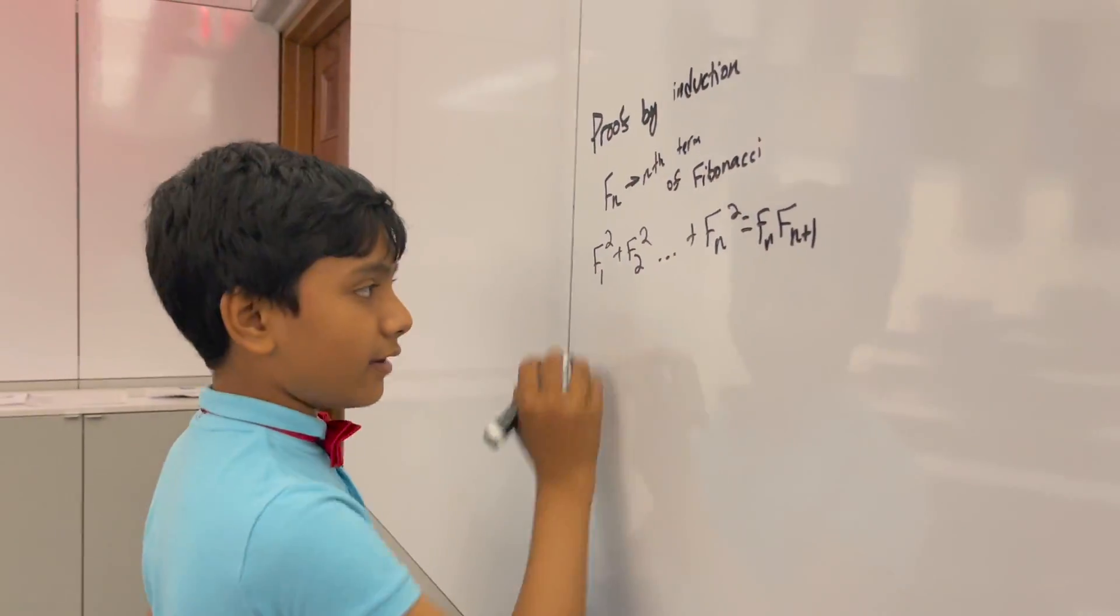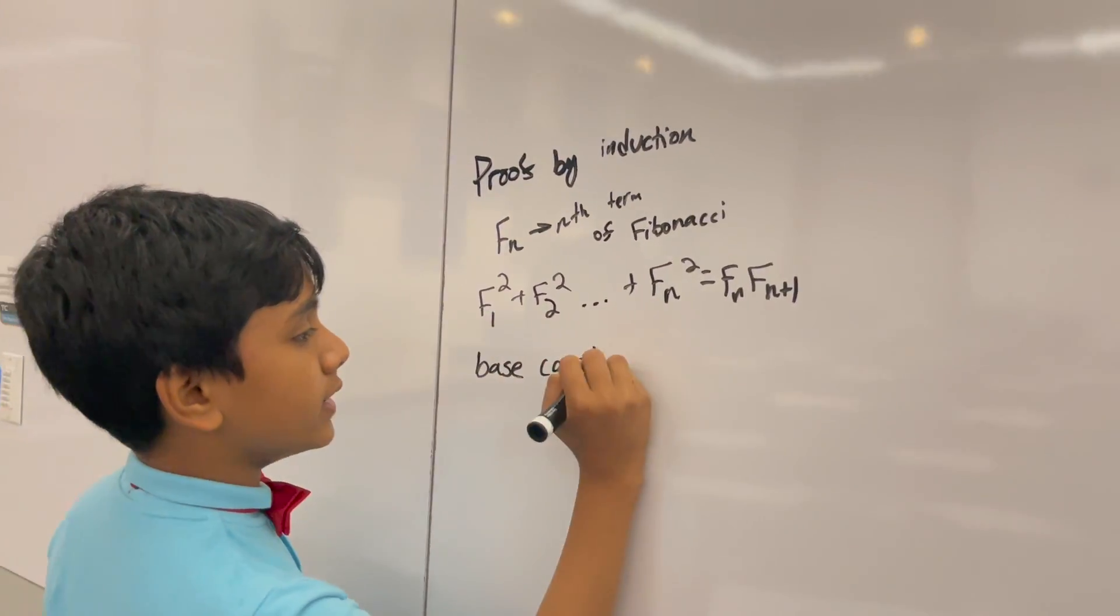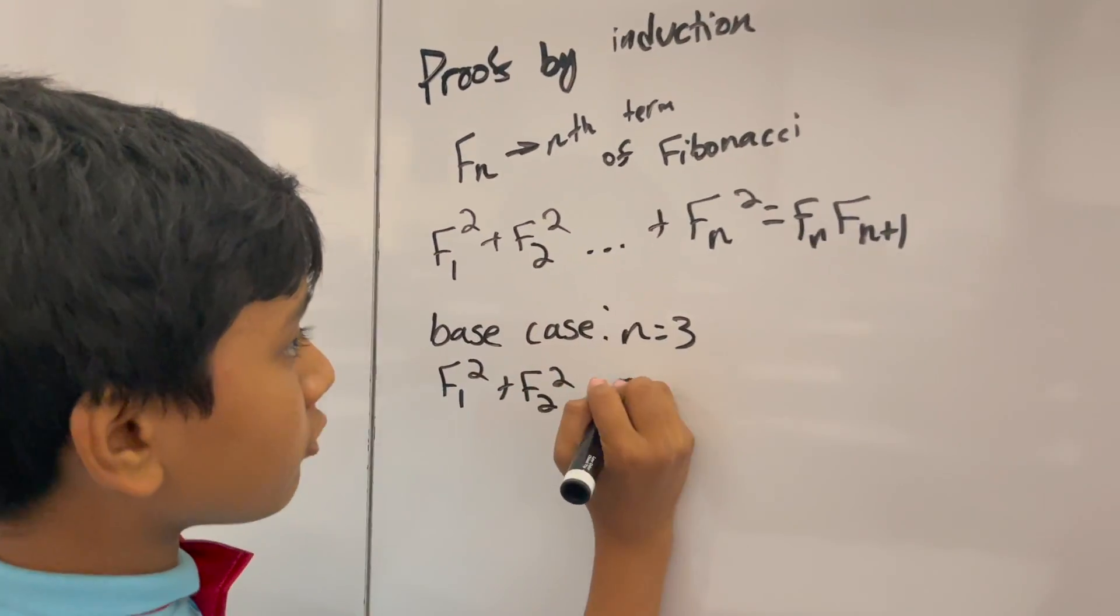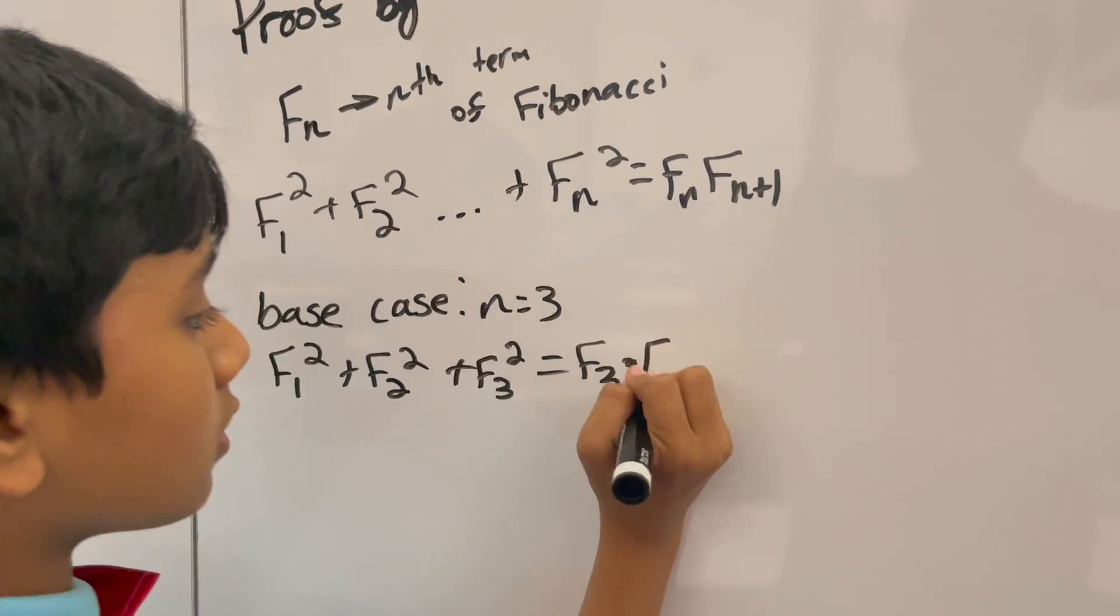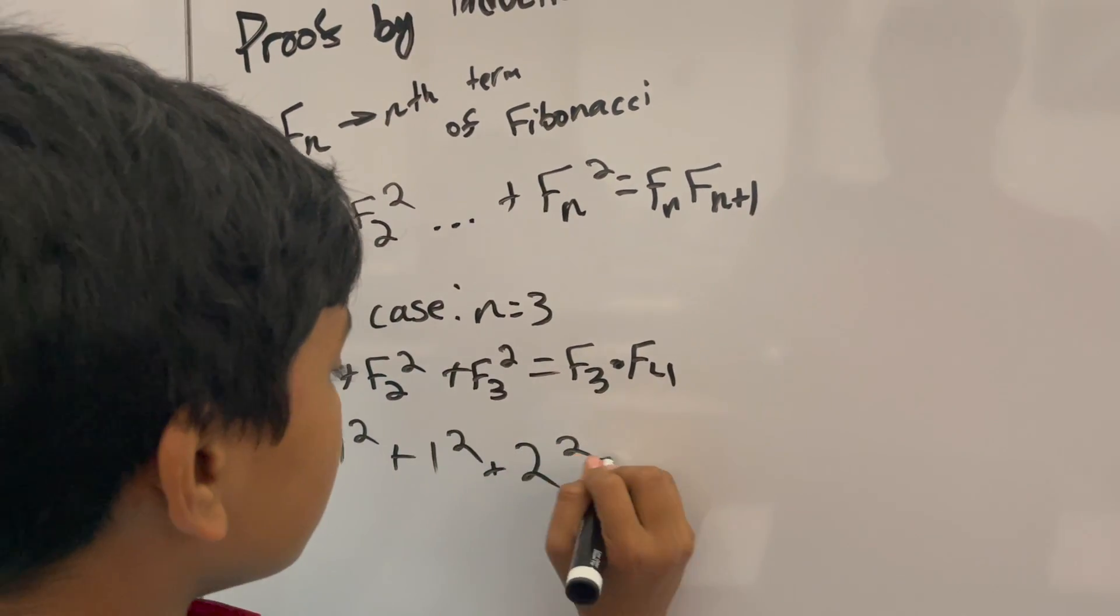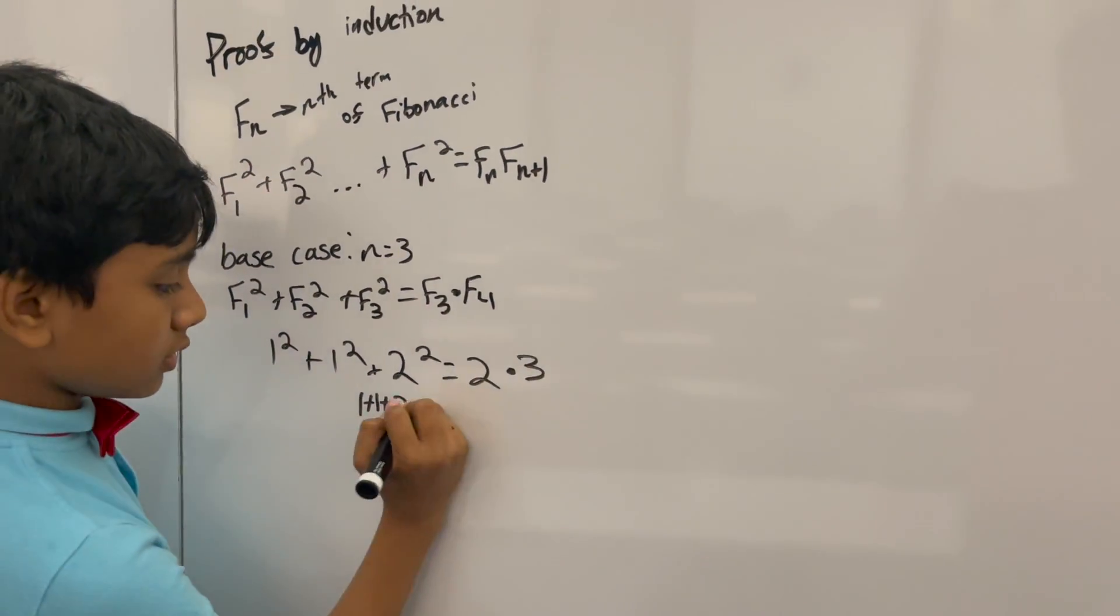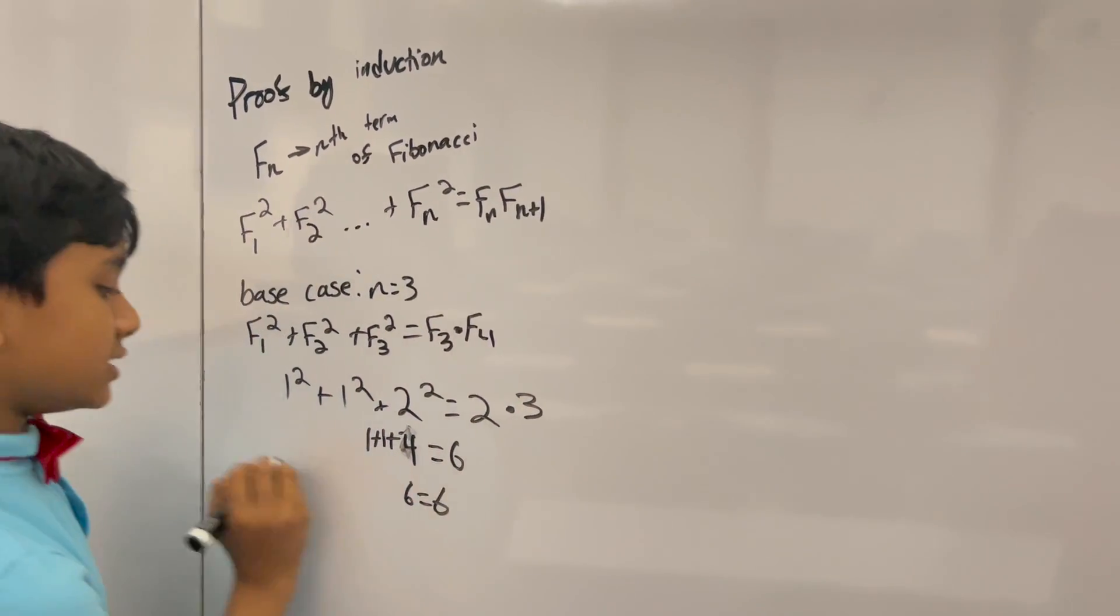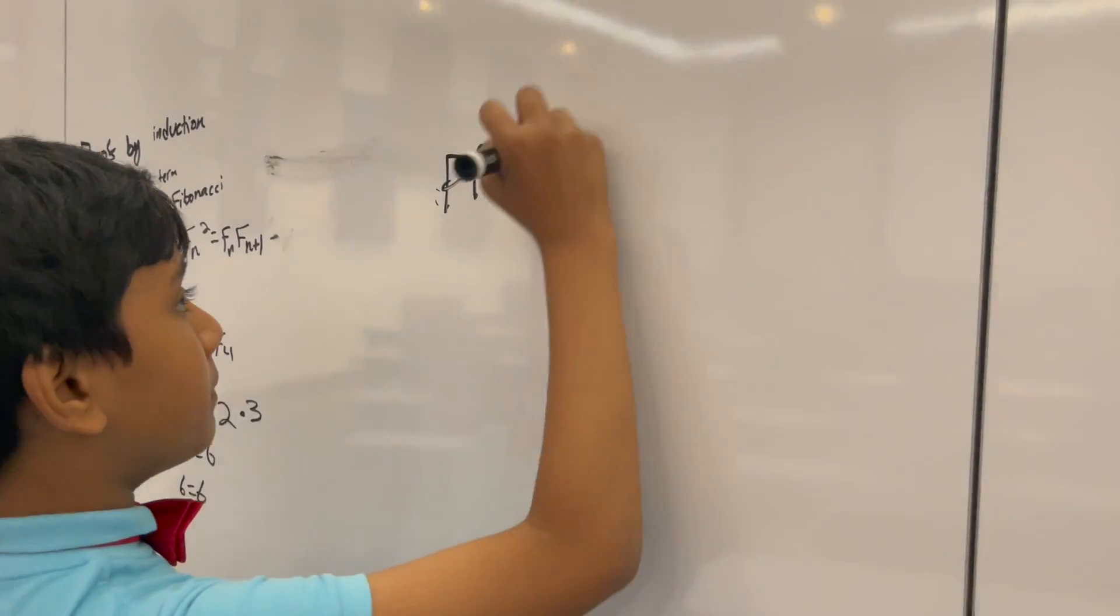First we have the base case where n equals 3. F1 squared plus F2 squared plus F3 squared equals F3 times F4. That's 1 squared plus 1 squared plus 2 squared equals 2 times 3. So 1 plus 1 plus 4 equals 6, so 6 equals 6. We verified it for the base case by induction.